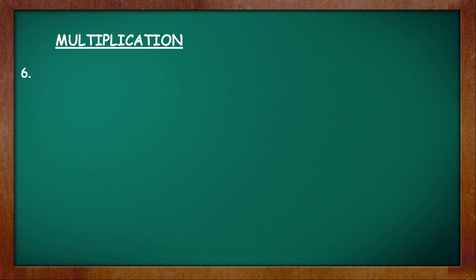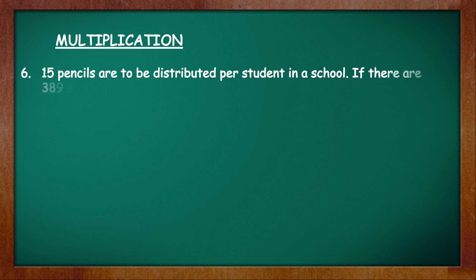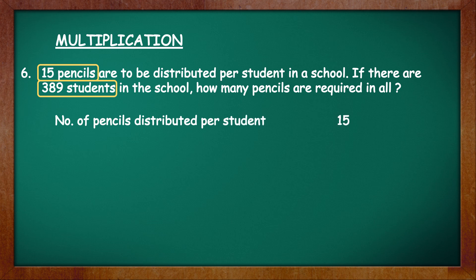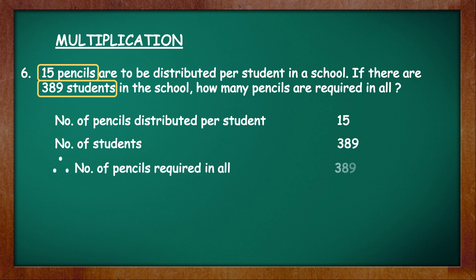One last question before we end. 15 pencils are to be distributed per student in a school. If there are 389 students in the school, how many pencils are required in all? We know the number of pencils given per student and we know the total number of students. In order to find the number of pencils required in all, we have to multiply the number of students into the number of pencils given per student. Begin with the first statement: number of pencils distributed per student, which is 15. Then write the number of students, which is 389.